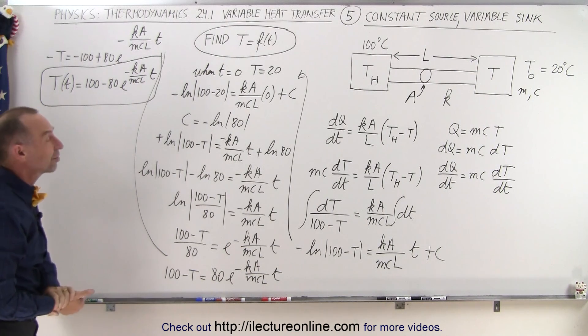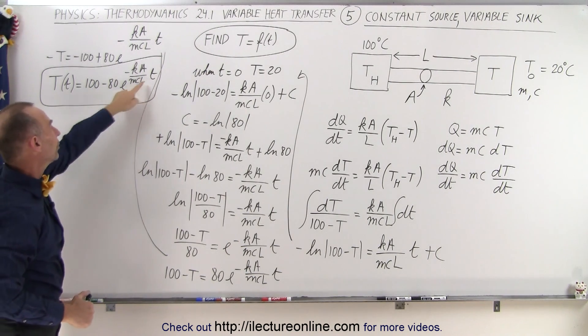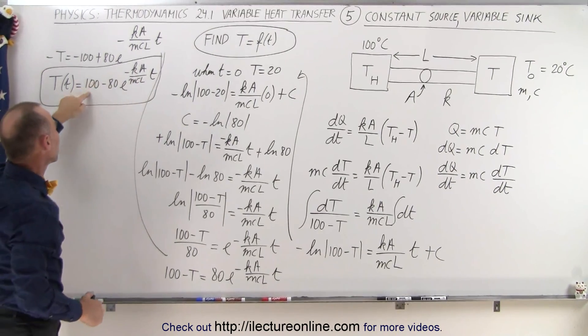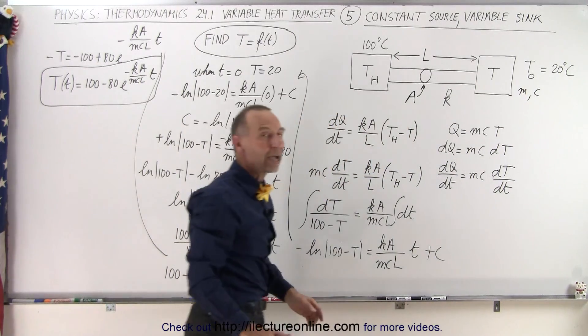Now let's check it real quick. If T is equal to 0, E to the 0 is 1, 100 minus 80 is 20, and that is indeed the initial temperature, so it does seem to work out.